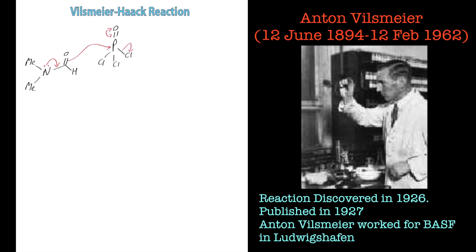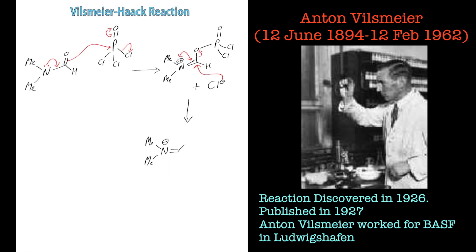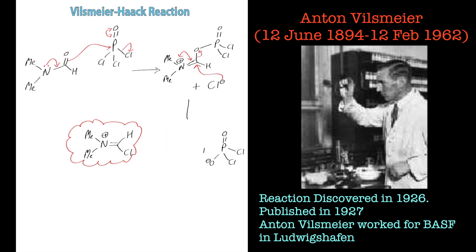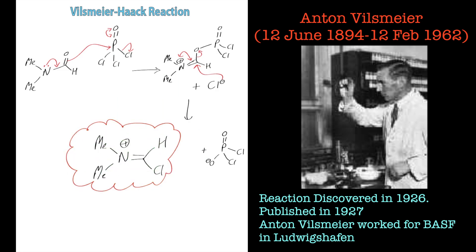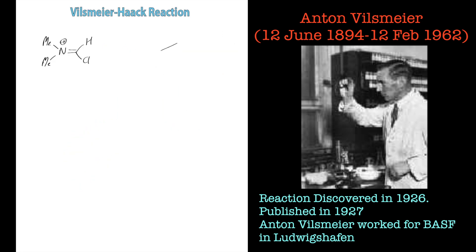POCl₃, or phosphoryl chloride. As you can see here, we form an active intermediate called the Vilsmeier intermediate by reacting dimethylformamide with POCl₃, kicking out chloride which then comes back in to attack as the transient species to give this Vilsmeier intermediate.